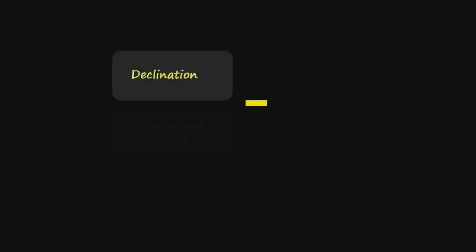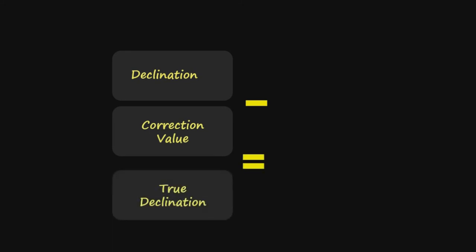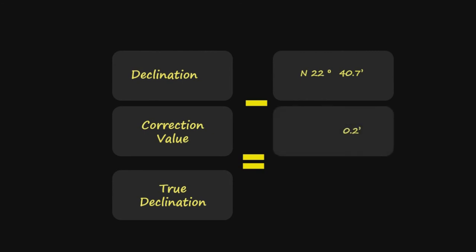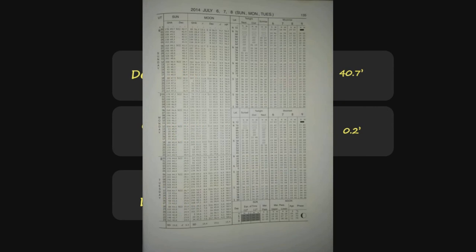Step 6: Solve for the true declination. Declination minus correction value equals true declination. The value of our declination is North 22 degrees and 40.7 minutes. The correction value is 0.2 minutes. Let's go back to the daily page of the nautical almanac — this is the daily page showing July 6, 2014.